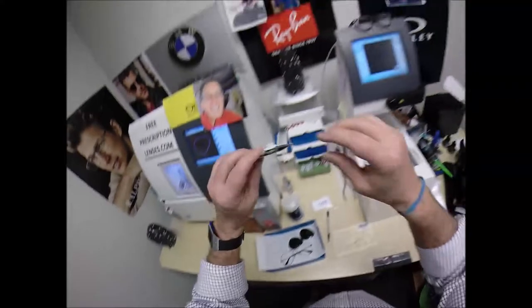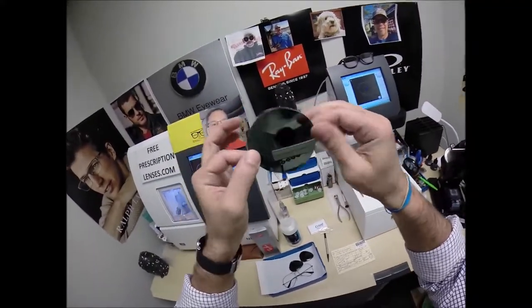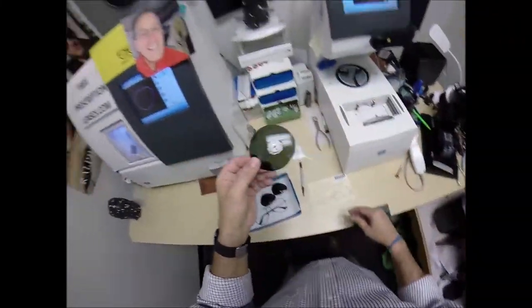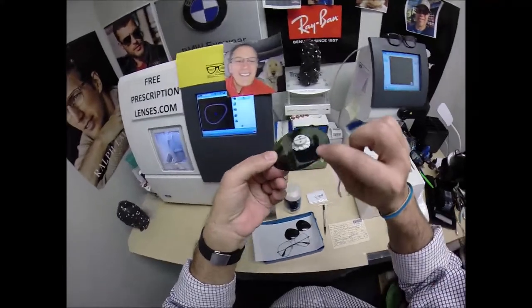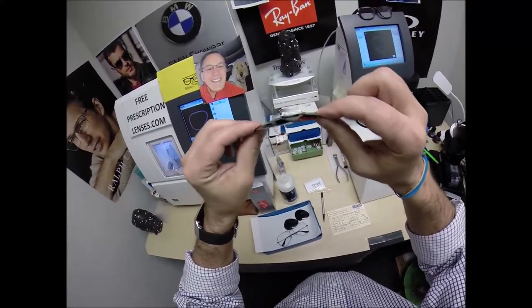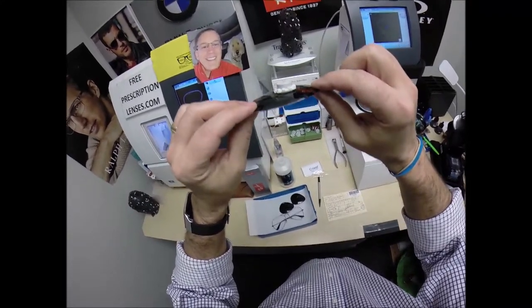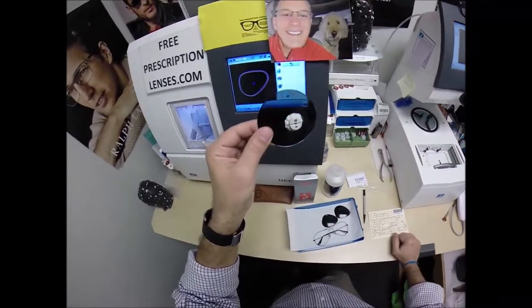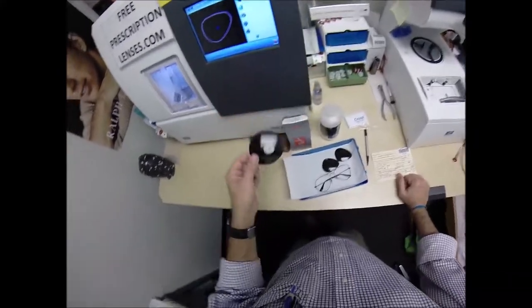So where was I at? Oh yeah, your lenses. Look how thin I got those bad boys. I did a knife edge grind thin as possible, which when you abbreviate knife edge grind thin as possible, comes out to keg tap, which sounds like something you would do back in college. But I'm doing it now on your lenses.